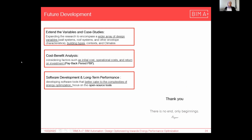For future development, we have three points. First, we can extend the variables and case studies with a wider array of design variables and parameters like wall systems, roof systems, and different building types. For software and long-term performance, we can focus on open source tools to have better and easier workflows. And the most important dimension is the cost benefit analysis — adding initial cost, operational cost, and payback period calculations will be more beneficial.